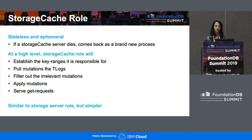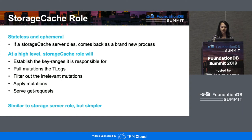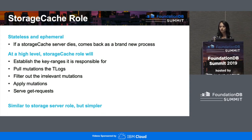We are bringing up a new storage cache role, which is going to be stateless and ephemeral. It will not remember any state persistently or durabilize any data. If a storage cache server dies, it comes back as a brand new process and might even be responsible for a completely different key range. At a high level, the storage cache role establishes a key range it is responsible for, pulls mutations from the T logs, filters out irrelevant mutations, applies those mutations, and serves read requests. It is very similar to a storage server role, but far simpler because we are not durabilizing any data.